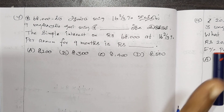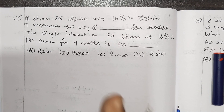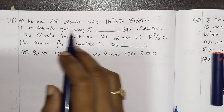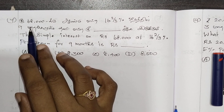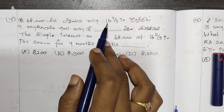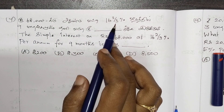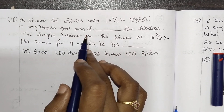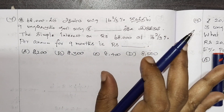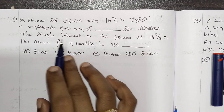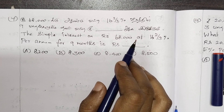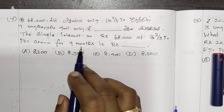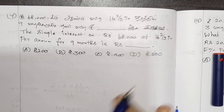The first question is number 7. The simple interest on rupees 68,000 at 16 and 2/3 percentage per annum for 9 months is what?